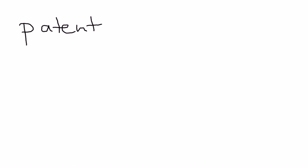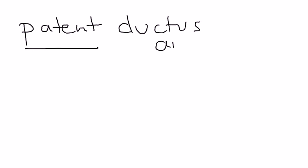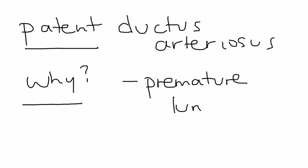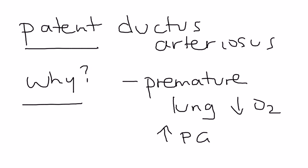In some cases the ductus arteriosus doesn't close, and when it doesn't close, it's called patent ductus arteriosus. By far the biggest reason it doesn't close is premature birth, because in premature babies the lung hasn't fully developed so oxygen is not as high as it should be. Another reason is if prostaglandin levels in the baby remain very high, which can also prevent closure.